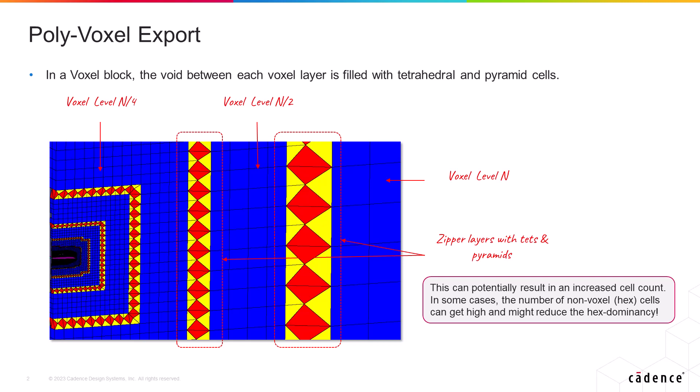Now, what's important to note is that the transitions between levels of the Cartesian mesh are made using tetrahedral cells and pyramids in order to maintain point-to-point cell-face matching. However, in some cases, the number of non-voxel or non-hexahedral cells that fill the transition regions can be quite significant.